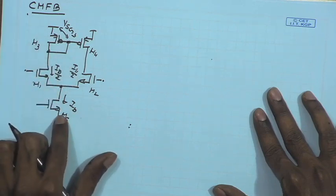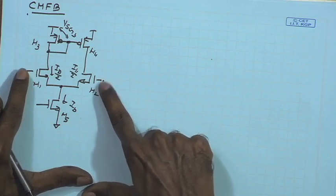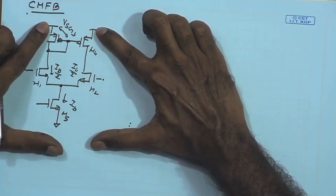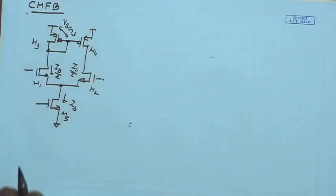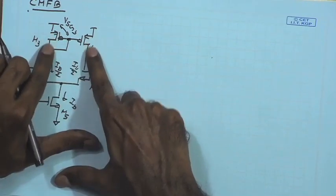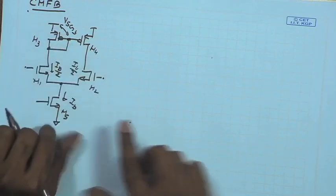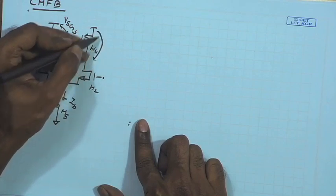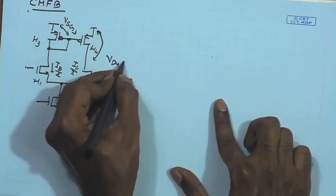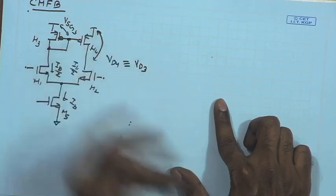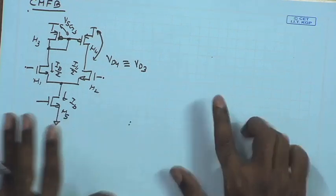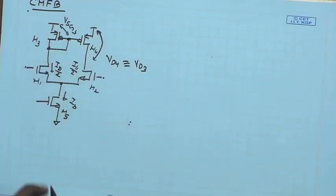M3's V_sg is enforced by the I_bias/2 current and by the symmetric biasing at the gates of M1 and M2. The source terminals of M3 and M4 are at the same potential, so their V_sg values are equal. M1 and M2 enforce the same current, so I_d of M3 and M4 are the same. Since V_sg is the same, V_sd must also be the same, meaning V_d of M4 is very close to V_d of M3 — ideally equal if the two transistor pairs are well matched.